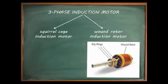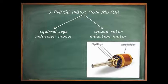Wound secondary rotors are often called slip ring induction motors. Slip ring induction motors are less extensively used compared to the squirrel cage induction motor because of their higher first cost and greater maintenance cost. They are used only when speed control or higher starting torque is required, due to the facility of adding external resistance in series with the slip ring.